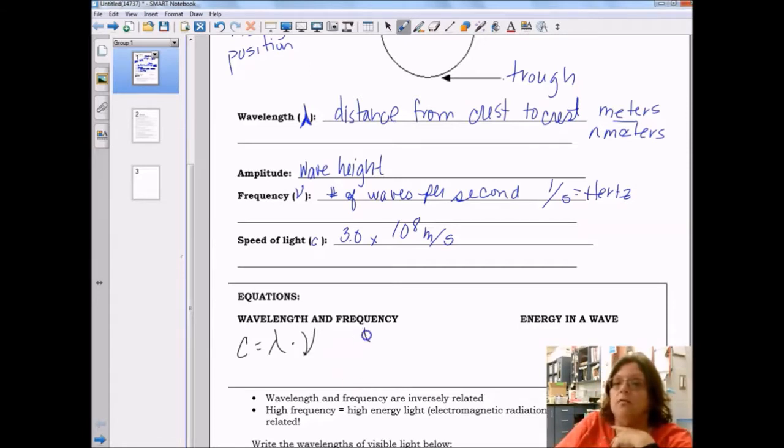Thus, if you were solving for wavelength, you would take speed of light divided by frequency, and if you're solving for frequency, you would take speed of light divided by wavelength.